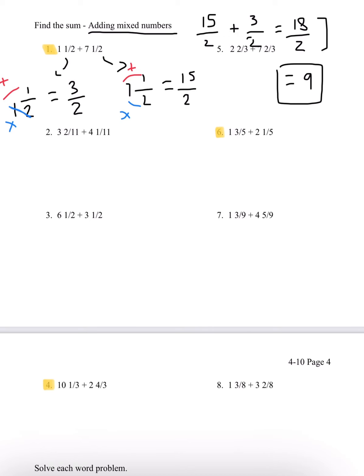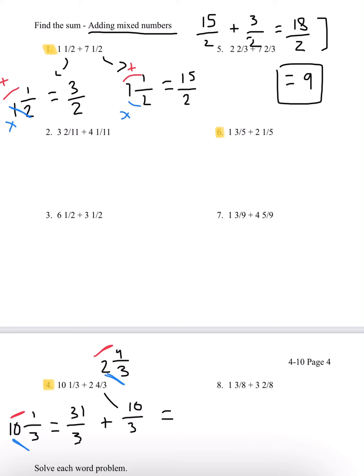Number 4, we have 10 and 1 over 3, plus 2 and 4 over 3. Let's do 10 and 1/3 first: 10 times 3 is 30, plus 1 is 31, so it's 31 over 3. For 2 and 4/3: 2 times 3 is 6, plus 4 is 10, which is 10 over 3. So if we add these together, we get 41 over 3, which is our answer.